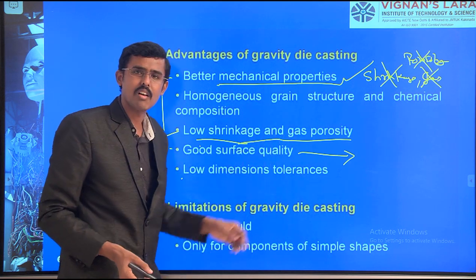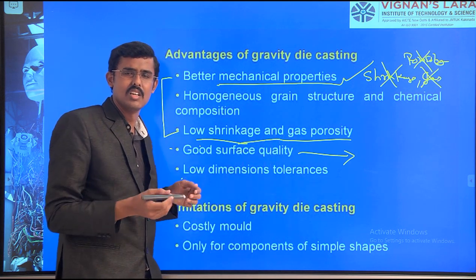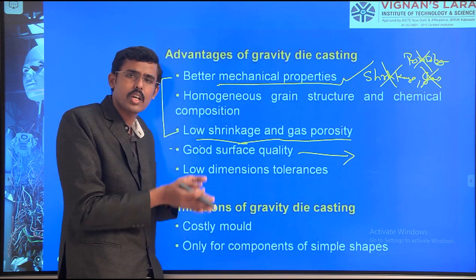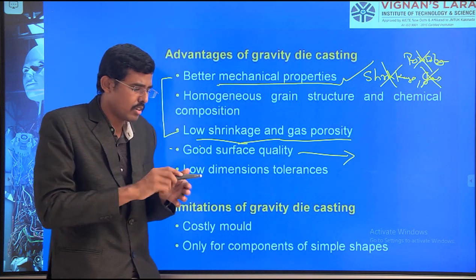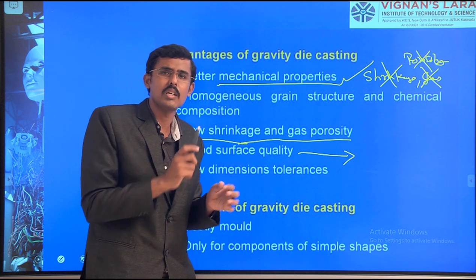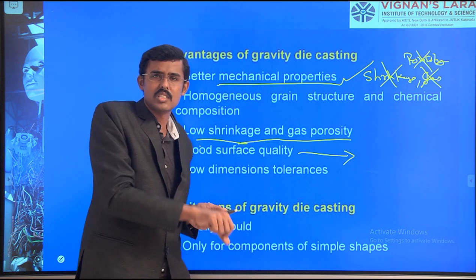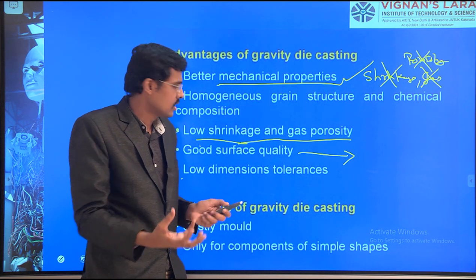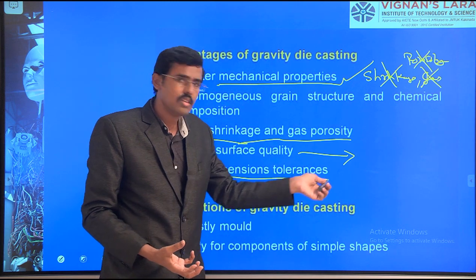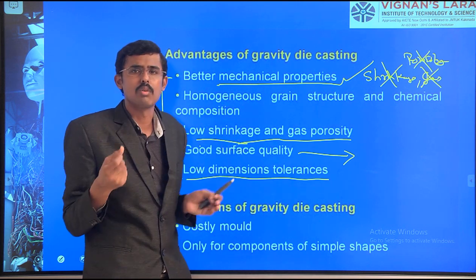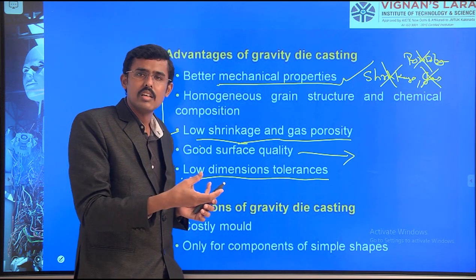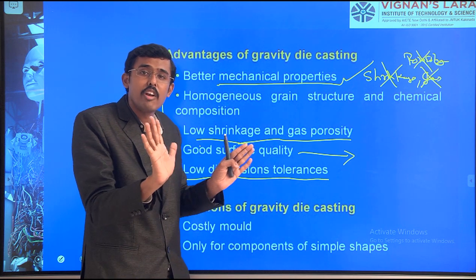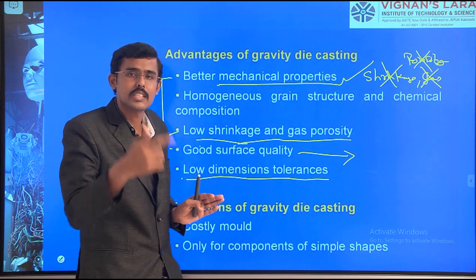Low dimensional tolerance is another advantage — there are no significant deviations. If we need a 5 mm or 10 mm dimension, the exact product will be received. In sand molding there are chances of enlargement of the sand. In die casting, the dimension is fixed — whatever we pour, it comes out exact, within the allowances given. Expansion will not happen in die casting.